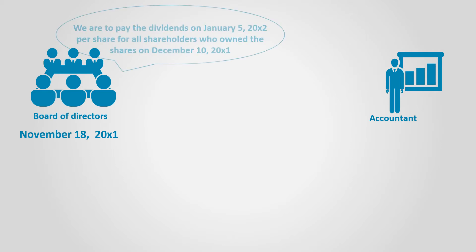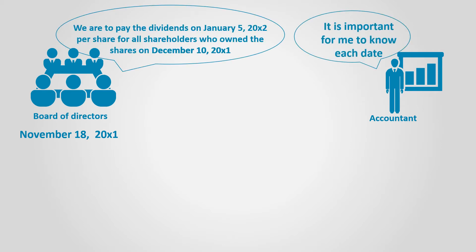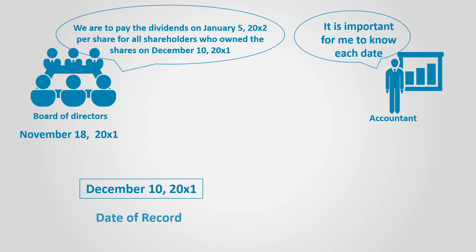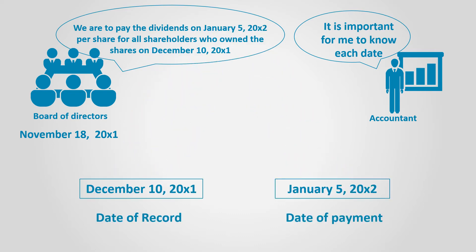The board is to distribute such dividends on January 5, 2000 X2, to shareholders who own the shares on December 10, 2000 X1. December 10 is known as the date of record, while January 5 is the date of payment.